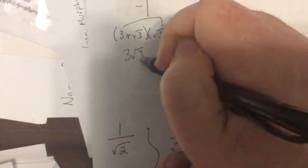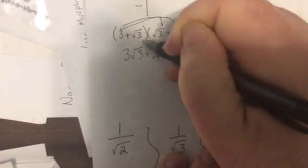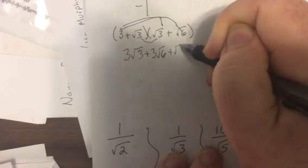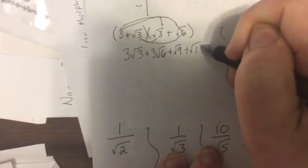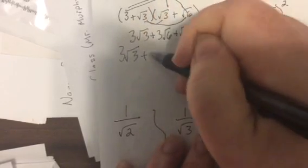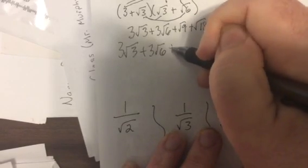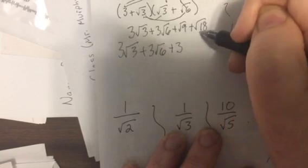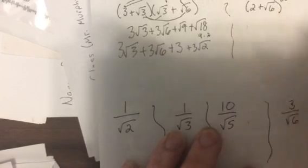3 square root of 3 — not much to that — and then 3 square root of 6 — not much to that — and then square root of 3 times square root of 3 is square root of 9, and square root of 3 times square root of 6 is square root of 18. So 3 square root of 3 can't do anything with, 3 square root of 6 can't do anything with, but square root of 9 is 3, and 18 is 9 and 2, and the square root of 9 is 3, but 2 I can't do anything with.